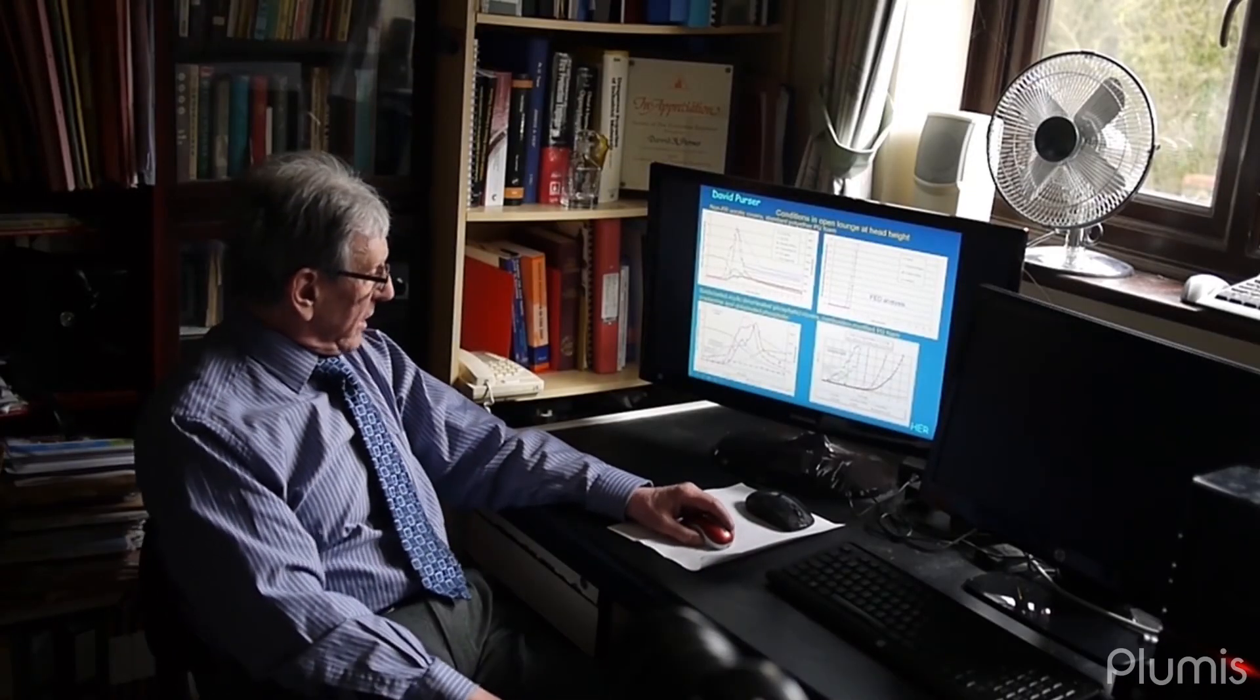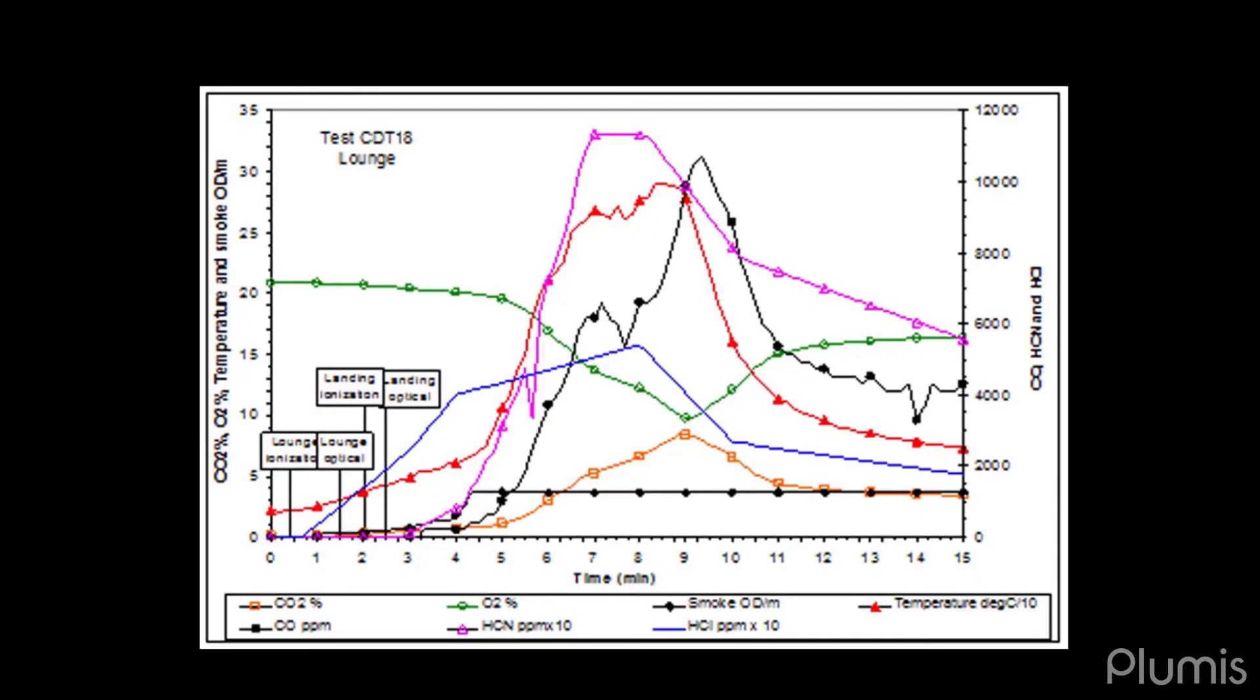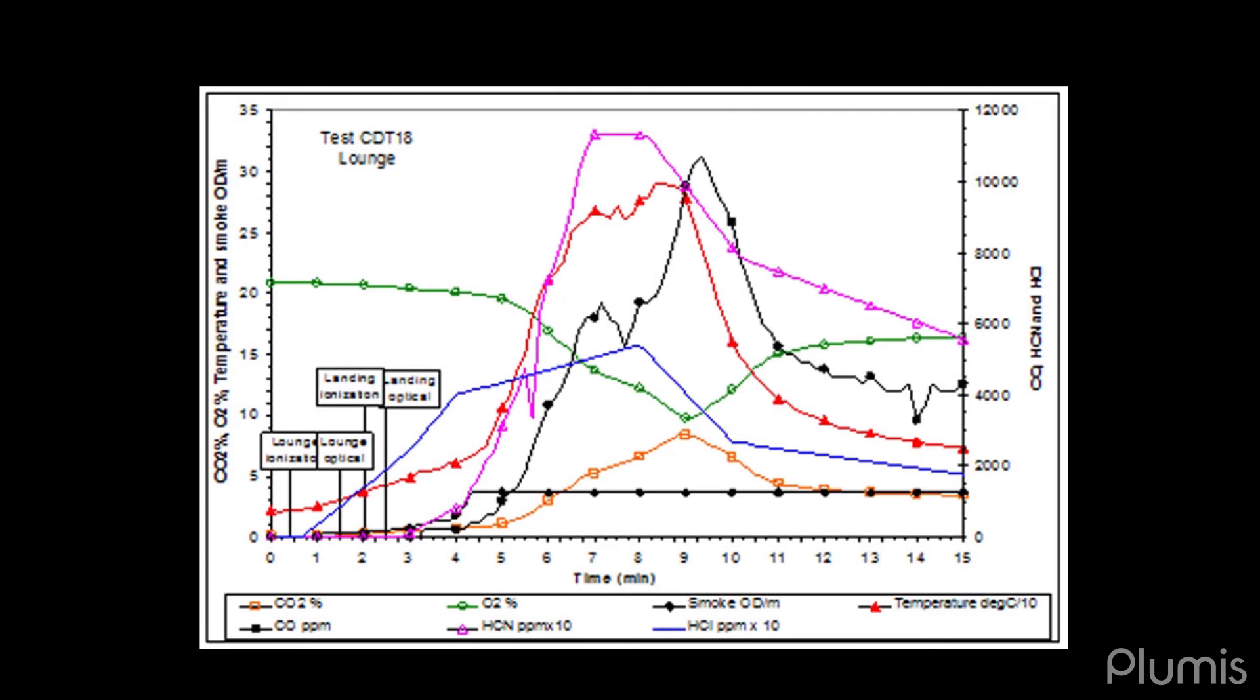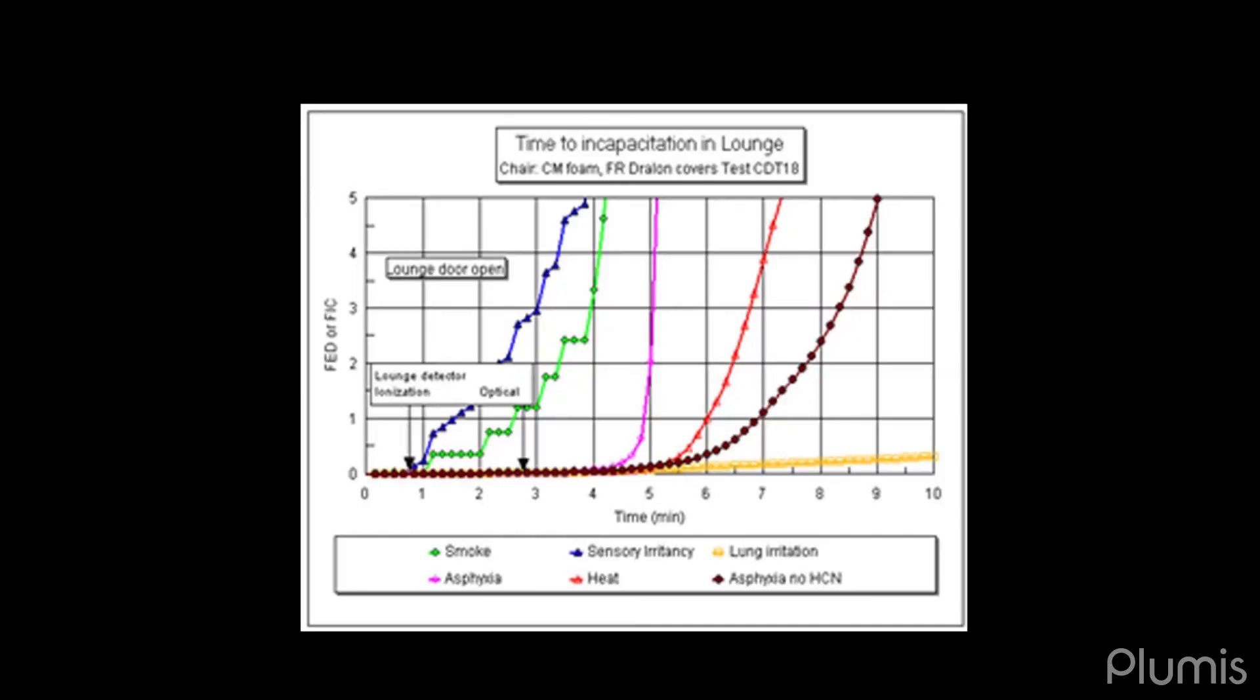In the lower case example here, we have a slightly slower developing fire, and so, as you can see, there's a bit more separation in the various hazards. The first hazard confronted by the victim in the room would be the irritant smoke, and then secondly, the effects of the asphyxiant gases, dominated very much in this case by hydrogen cyanide. And then after that, about a minute after that, they would be overcome by heat.